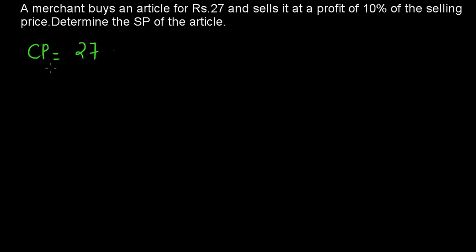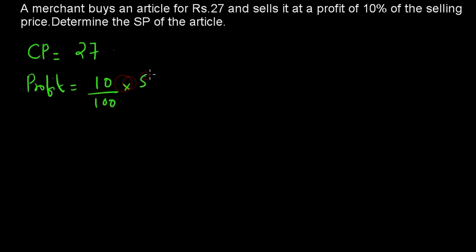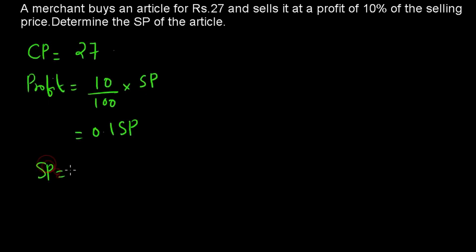But here it is specifically given that the profit is 10% of the selling price. So what does that mean? Profit equals 10% of the selling price, which is 10 divided by 100 into SP, equal to 0.1 SP. So profit equals 0.1 SP and cost price equals 27. Then what is the selling price?